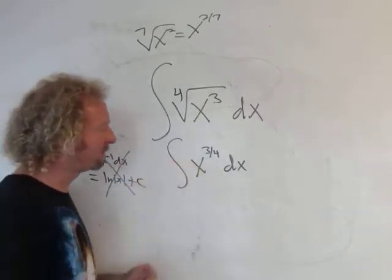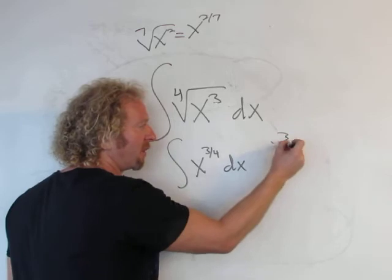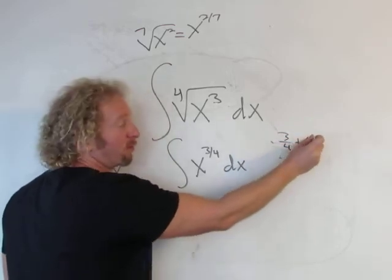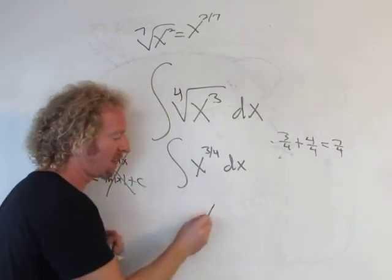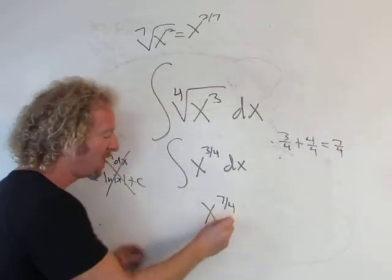So we add one. We get three-fourths plus one. One is really four-fourths, so you get three-fourths plus four-fourths, which gives you seven-fourths. It's gonna be x to the seven-fourths.